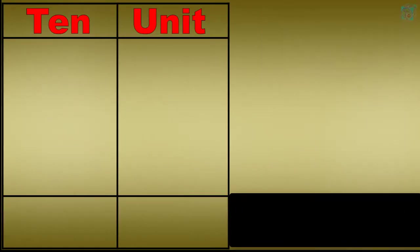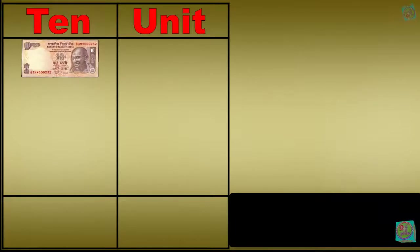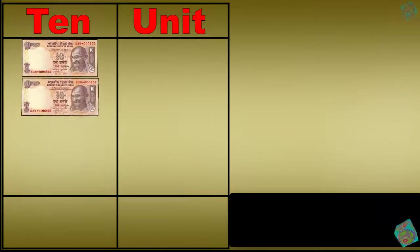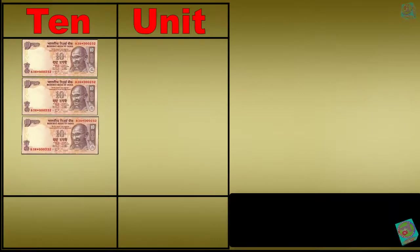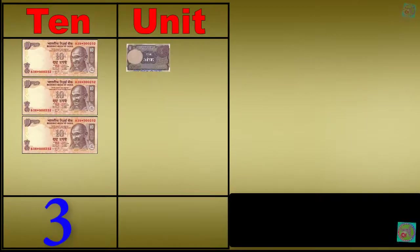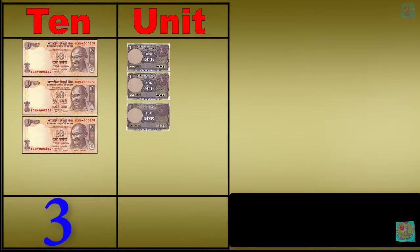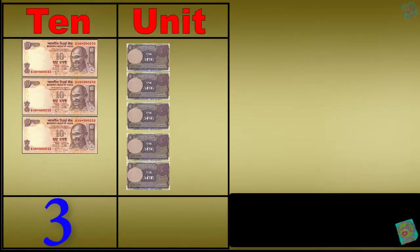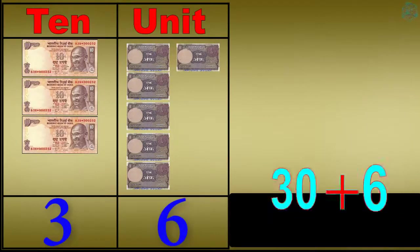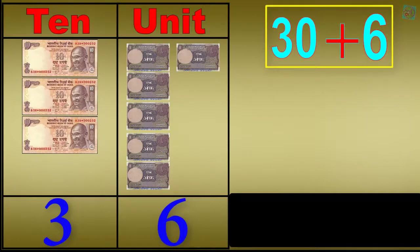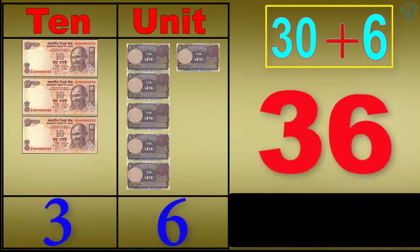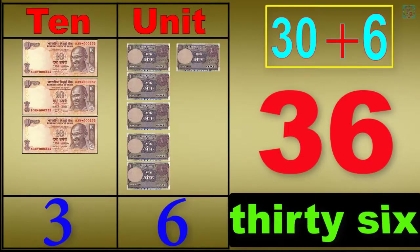1 ten, 2 tens, 3 tens, 3 tens 1 unit, 3 tens 2 units, 3 tens 3 units, 3 tens 4 units, 3 tens 5 units, 3 tens 6 units. 30 plus 6 equals 36. T-H-I-R-T-Y-S-I-X, 36.